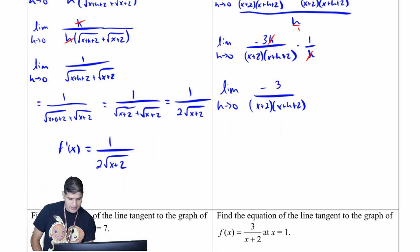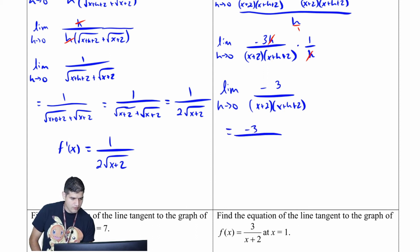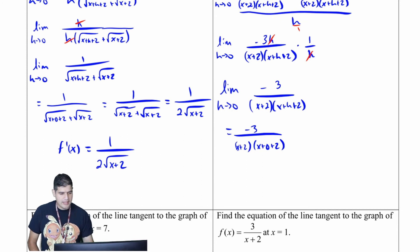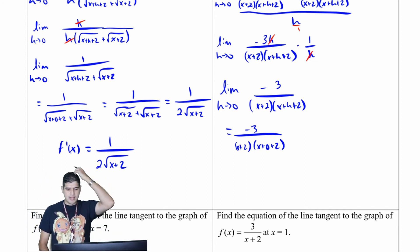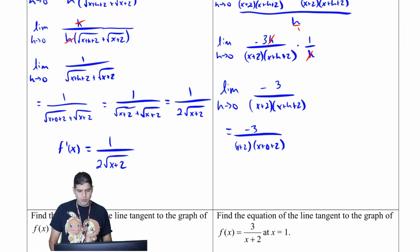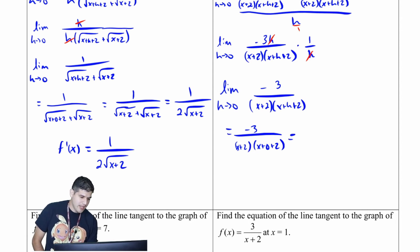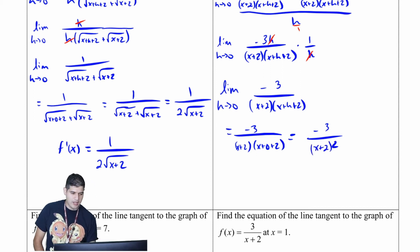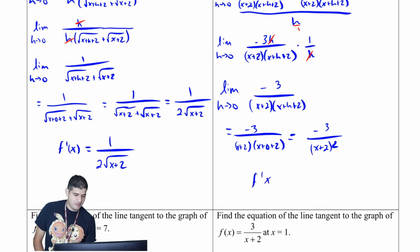Substituting zero, I get negative three over x plus two times x plus zero plus two, which is negative three over x plus two times x plus two — two of the same factors. So this equals negative three over x plus two squared. Therefore f prime of x equals negative three over x plus two squared.